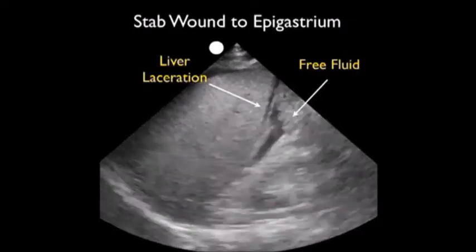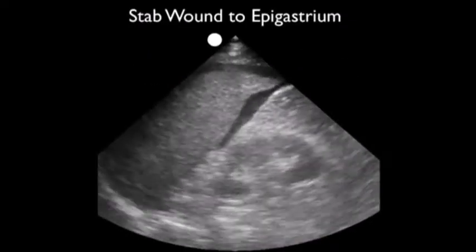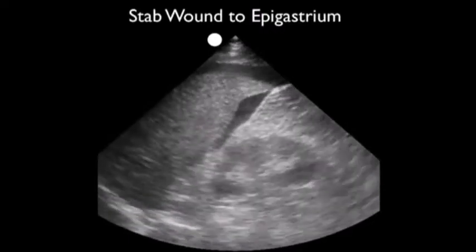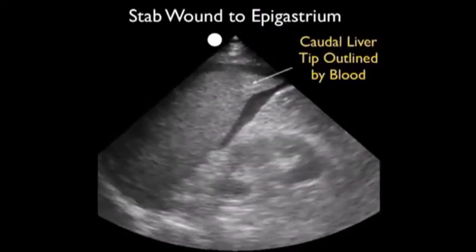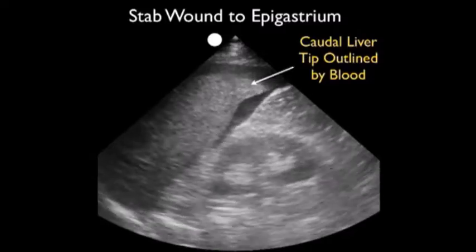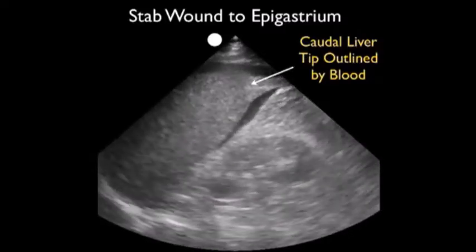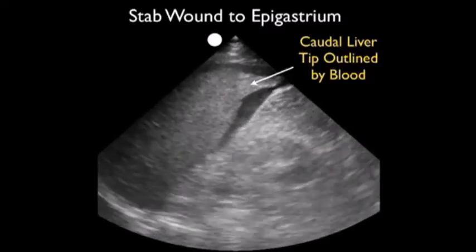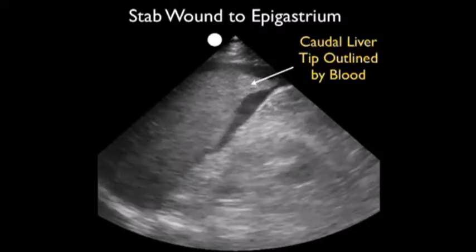As this patient had unstable hemodynamics, the next move was to package for the operating room. Here we can see the caudal tip of the liver waving around in all the fresh fluid — in this case blood. I obtained this view by moving the probe one intercostal space inferior from the last view to well delineate that caudal tip of the liver, which we can see moving around in all the fresh fluid.